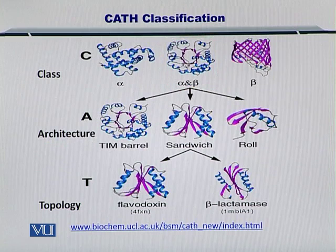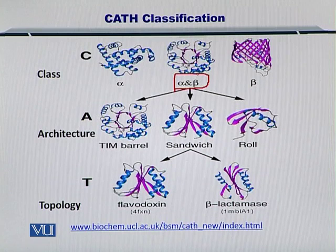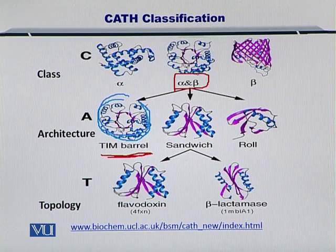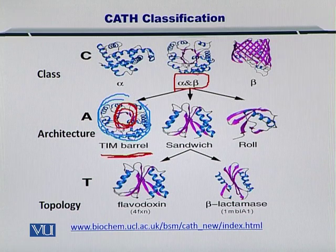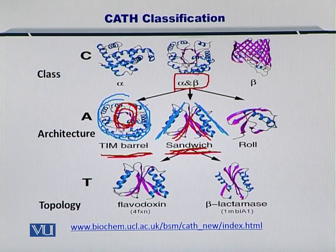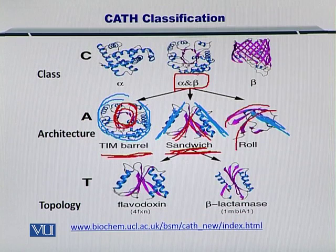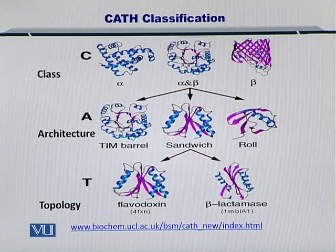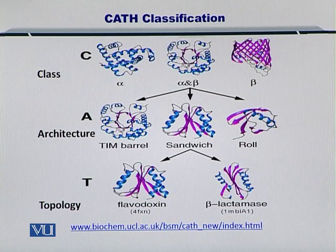Alpha and beta means that you have alpha helices and beta sheets that are mixed together, and you can organize them into various different combinations. The first one is the TIM barrel, where you have alpha helices surrounding the architecture and beta sheets in the middle. For a sandwich, you have beta sheets in the middle with alpha helices surrounding them. And for a roll, you have alpha helices with beta sheets rolling over the alpha helix. These different combinations can be created by alpha helices and beta sheets in alpha and beta architecture.